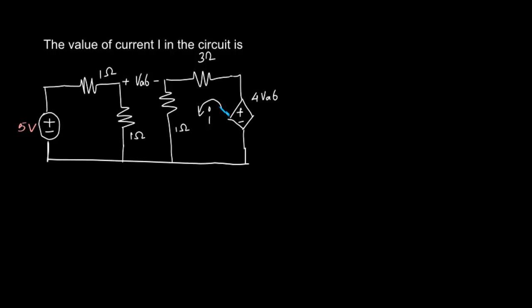We are asked to find out the value of current I in this circuit. So we have a dependent voltage source here with the voltage across it being 4*VAB, and there is a potential here.